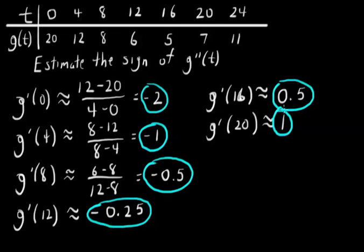The pattern that we see is that our derivative is getting less negative and more positive. So in particular, what we can say is g prime of t is increasing.